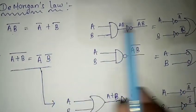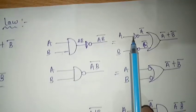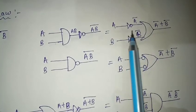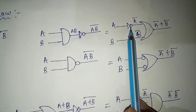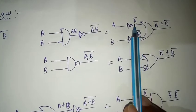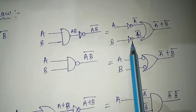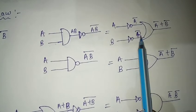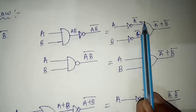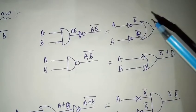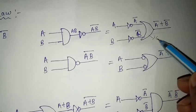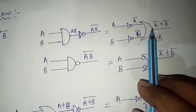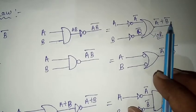To get Ā + B̄: when A is taken as input and passed through a NOT gate, we get Ā, and B passed through a NOT gate gives B̄. After getting Ā and B̄, we take an OR gate. We pass Ā and B̄ through the OR gate and we get the expression Ā + B̄.